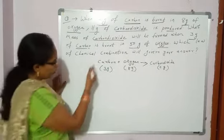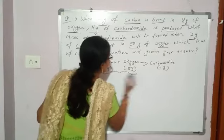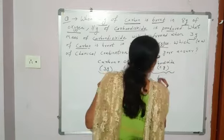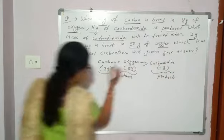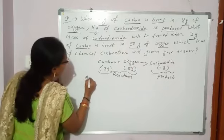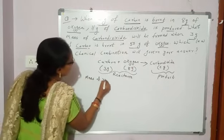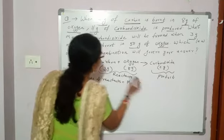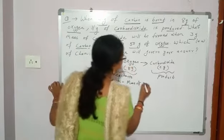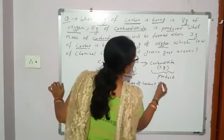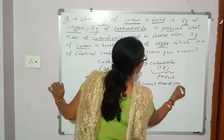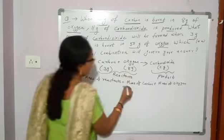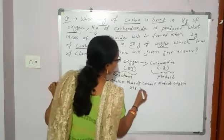First we will see what carbon and oxygen are — these are the reactants. And what is carbon dioxide? That is the product. So mass of reactants equals mass of carbon plus mass of oxygen. Mass of carbon is 3, mass of oxygen is 8, and 3 plus 8 equals 11 gram.